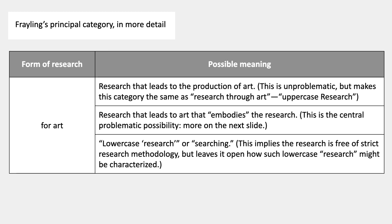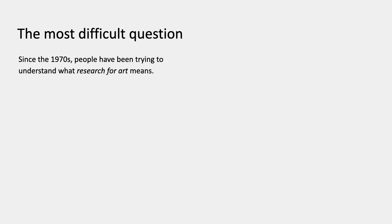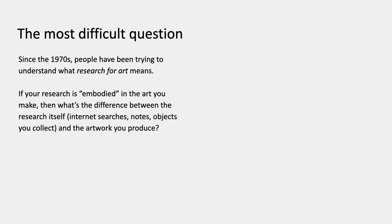The problematic case is the middle one: research for art as research embodied in the artwork. People have been trying to understand what that means since the 1970s. If your research is embodied in the art that you make, then what's the difference between the research itself — your internet searches, your notes, the objects you collect — and the artwork you produce? A scientist would not say that their research is embodied in their scientific conclusions; the research preceded and informed those conclusions. But the claim here is that as an artist, you do research for your work, and then the research itself ends up being embodied in the work. That's why people have been struggling to understand this for 50 years.